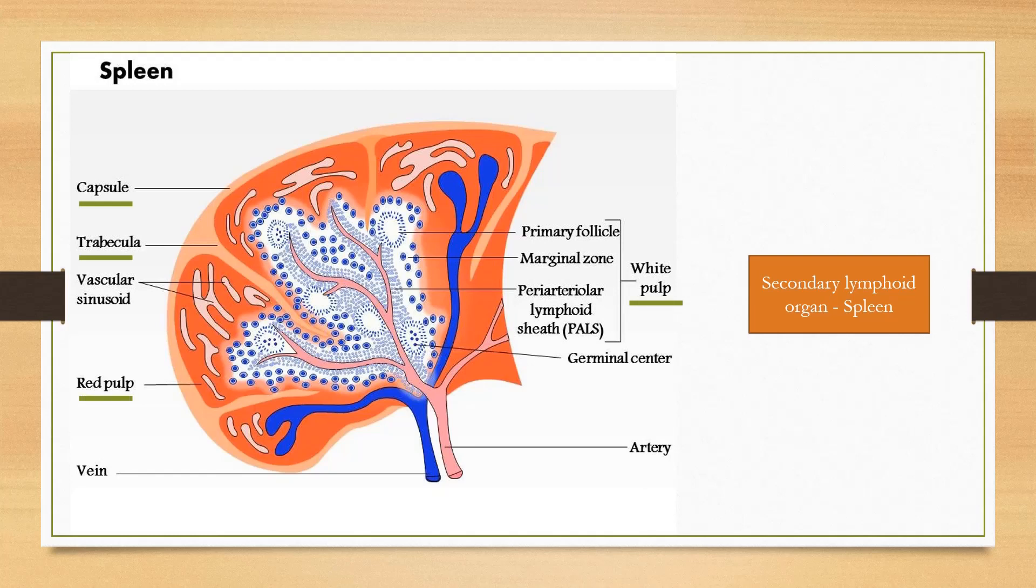Red pulp contains erythrocytes, lymphocytes, and macrophages. Spleen destroys and removes the defective erythrocytes by macrophages.